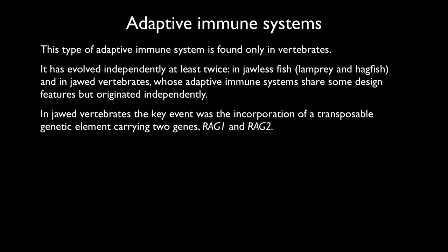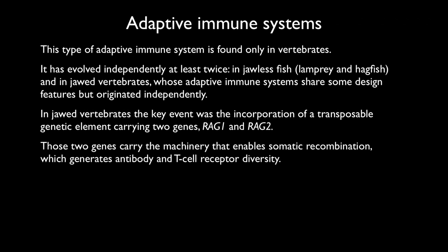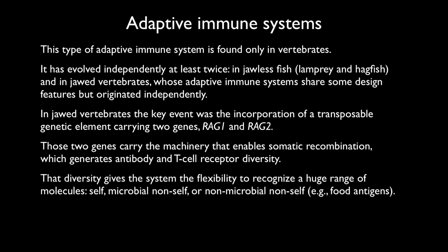In jawed vertebrates, the key event was incorporating a transposable genetic element that carried two genes, RAG1 and RAG2. Those two genes carry the machinery that enables the somatic recombination that generates antibody and T-cell receptor diversity. It is that diversity that gives the system its flexibility to recognize a huge range of molecules — pathogens never encountered before, but also microbial non-self, self, non-microbial non-self, and food antigens. This would be one of the reasons that we react to food allergies.